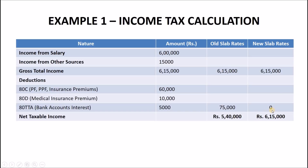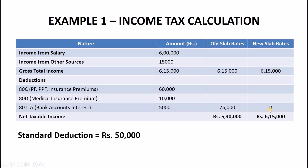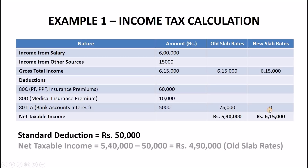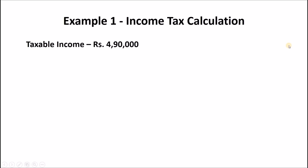Now to calculate your income tax, if you are an employee or a pensioner, you get a standard deduction of Rs 50,000 only if you are using old tax slab rates. Standard deduction will not be applied if you are using new tax slab rates. So your net taxable income becomes Rs 4,90,000 if you are using old tax slab rates, but it remains Rs 6,15,000 under new tax slab rates. Let us now see the tax calculation using old tax slab rates for which taxable income is Rs 4,90,000.